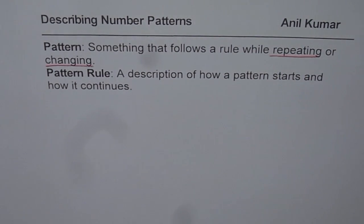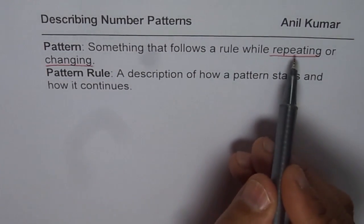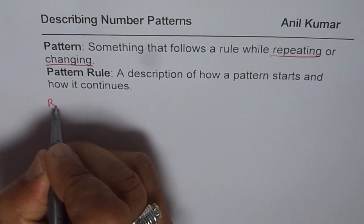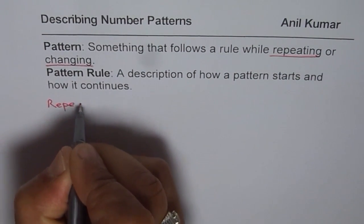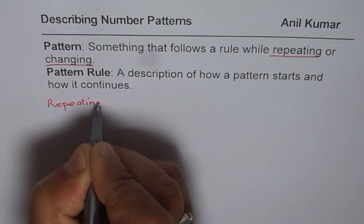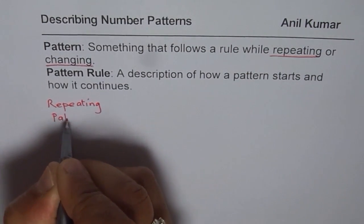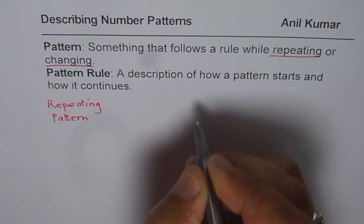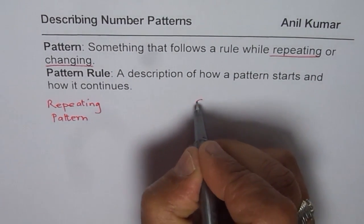That means we could have two types of patterns. One type of pattern is the one which repeats, so we have repeating pattern. And the other type is changing pattern.